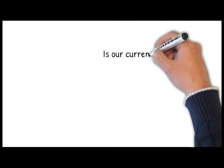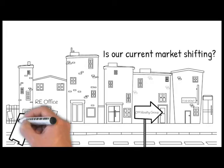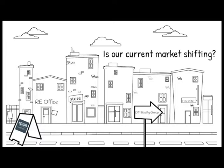Is our current market shifting? The latest rent-to-buy report from Trulia explained that home ownership remains cheaper than renting with a traditional 30-year fixed-rate mortgage in the 100 largest metro areas in the United States.